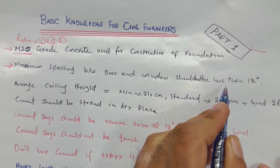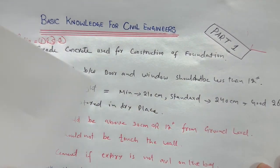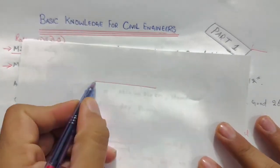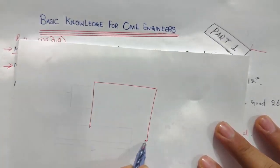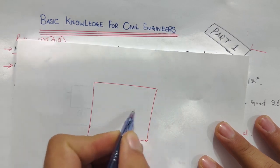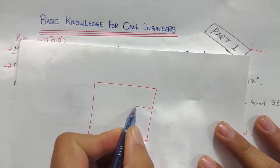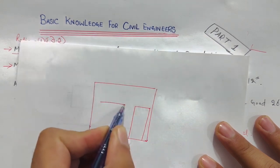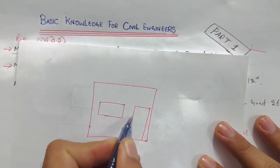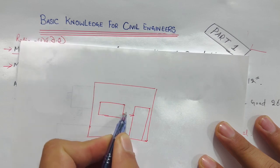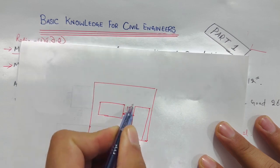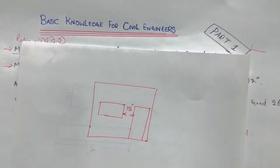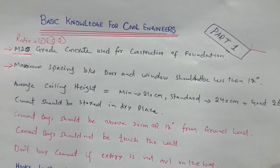The next point: minimum spacing between door and window should not be less than 12 inches. As you can see in this front elevation of a room, this is the door and this is the window. The spacing between door and window should not be less than 12 inches. Normally you can keep up to 18 or 20 inches, but it should not be less than 12 inches — this is the main point.